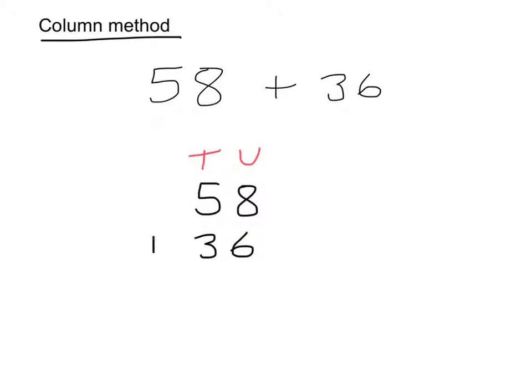We now add these numbers together. First you add the units together, so that is 8 add 6, which gives an answer of 14. Now you only ever write down the units and then the 10 gets carried into the next column.